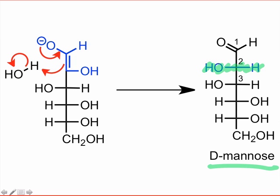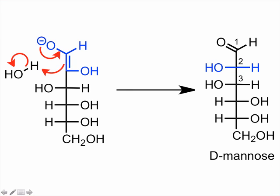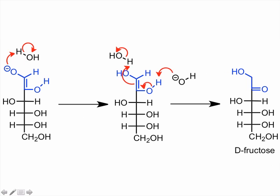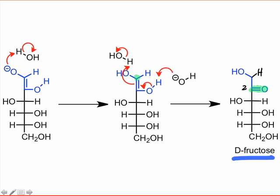What about protonation at C1? If we imagine the base acting in a general way, we see that protonation at carbon-1 produces a new carbonyl group. The carbonyl group has shifted to C2, and a new proton has found its way to C1. This ketose is just the D-fructose product we observed.